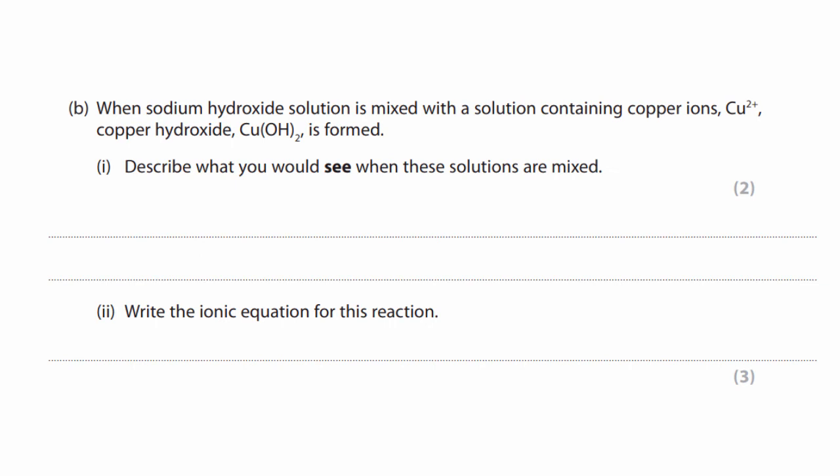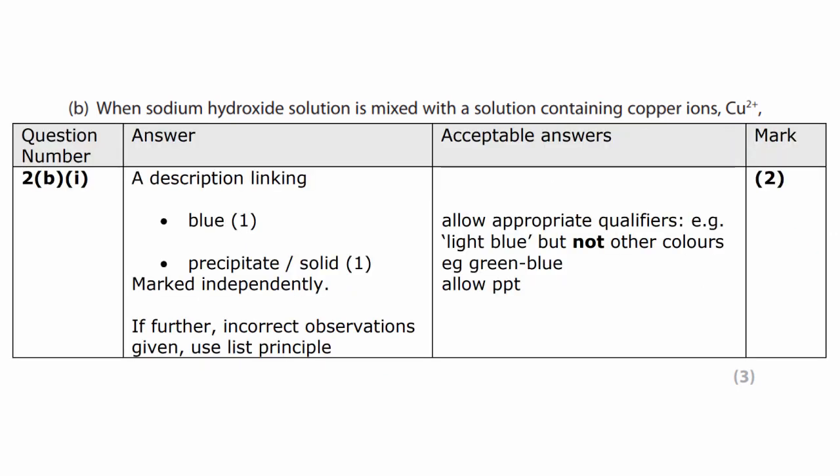In this past paper question, the examiner says, when sodium hydroxide solution is mixed with a solution containing copper ions, Cu2+, copper hydroxide Cu(OH)2 is formed. Describe what you would see when these solutions are mixed. And write the ionic equation for this reaction. Well in the first response we were looking for a blue precipitate. So we always give a colour and state.